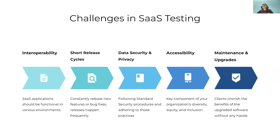As SaaS applications constantly release new features or bug fixes, releases happen frequently. Therefore, there is less time to test the application. We need to test all the licensing factors, usage, the number of users, integrations, and functionality for each release cycle. It is also hard to handle privacy and security while multiple users access the same page simultaneously. The data security challenges faced by SaaS vendors are varied for each product. SaaS companies are now being forced to handle personal data that needs to comply with privacy regulations, and following standard security procedures while working in parallel with new product features is really challenging.